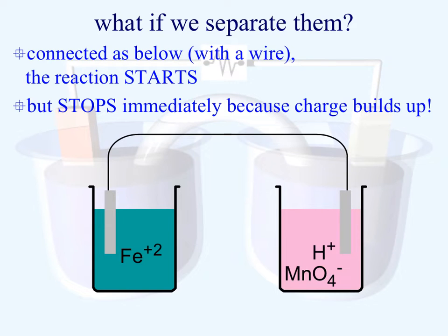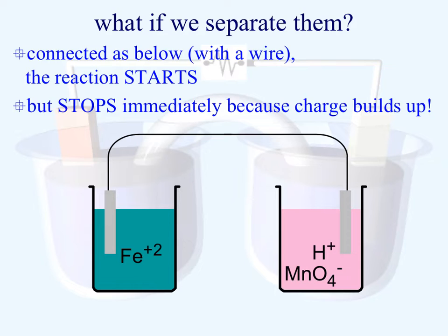If we separate the two reactions into what are known as cells — basically we have our oxidation process and our reduction process in two separate areas — as the oxidation process occurs and releases electrons, the reduction process will be occurring on the other side. Electrons are going to be transferred through the wire that connects the two cells. However, the reaction is going to stop pretty much immediately because there's going to be a very rapid buildup of charge in terms of the products produced, and you're not going to have a balance of charges inside the two half-reaction containers.